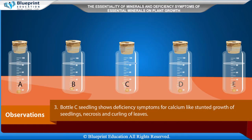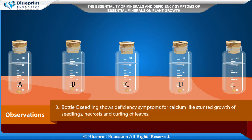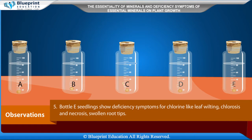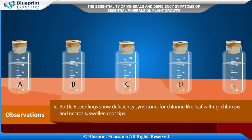Bottle C seedling shows deficiency symptoms for calcium, like stunted growth of seedlings, necrosis, and curling of leaves. Bottle D seedling shows deficiency symptoms for iron, like interveinal chlorosis and reduced growth. Bottle E seedlings show deficiency symptoms for chlorine, like leaf wilting, chlorosis, necrosis, and swollen root tips.